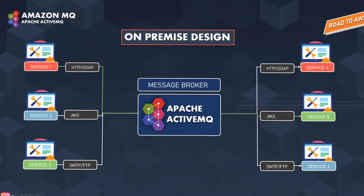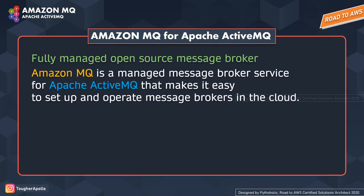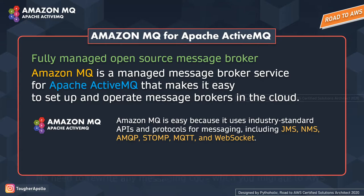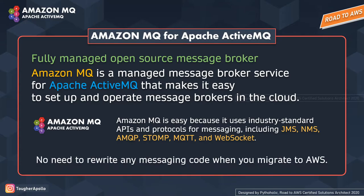Amazon MQ makes it easy to migrate messaging to the cloud while preserving the existing connections between your applications. It supports industry-standard APIs and protocols including JMS, NMS, AMQP, STOMP, MQTT, and WebSockets. This enables you to move from any message broker that uses these standard APIs to Amazon MQ, usually without having to rewrite any messaging code. If you have used SQS and SNS, Amazon MQ also supports both point-to-point messaging and publish-subscribe messaging, so you get the benefits of both messaging styles and patterns.